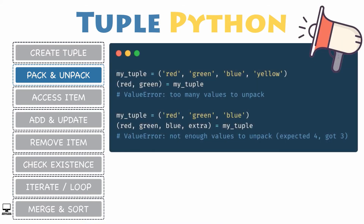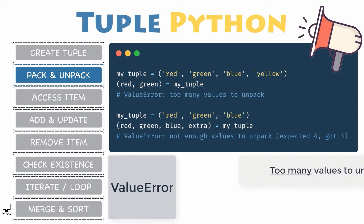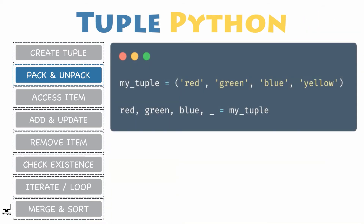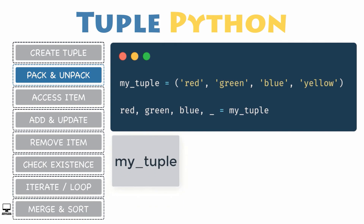Here are some very common errors during tuple unpacking: too many arguments, or not enough values to unpack. This happens when you try to unpack a tuple that has more or fewer values than the number of variables on the left side. This results in 'not enough values to unpack' — expecting more items or fewer variables.